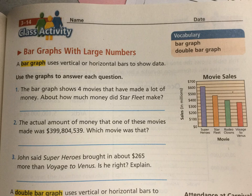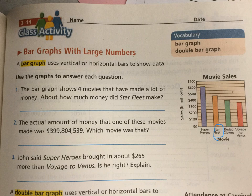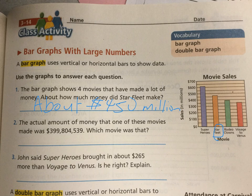The bar graph shows four movies that have made a lot of money. About how much money did Starfleet make? We're going to look at the bar graph. Find Starfleet — it's in the orangish color. That bar goes a little bit above the $450 million mark. What line is it closest to? It's closest to the $450 million mark, so we're going to say about $450 million. You can write out the whole number or write it out with words. See how we rounded there? We went to the closest line, and that's the about amount. That's how you round with a bar graph.